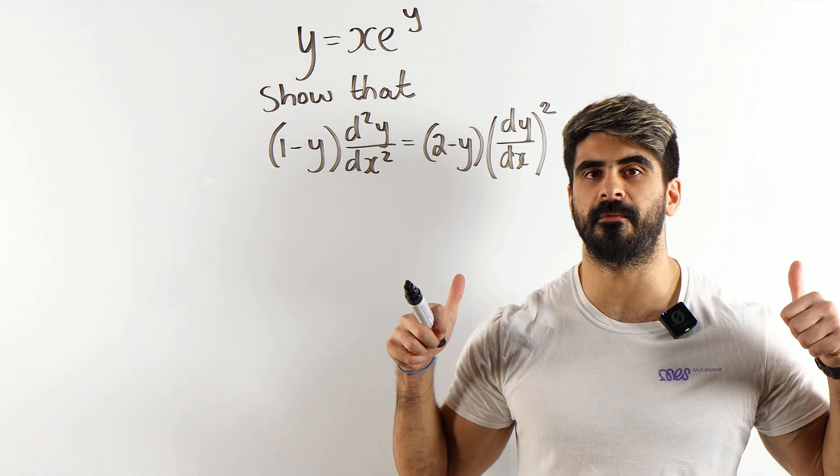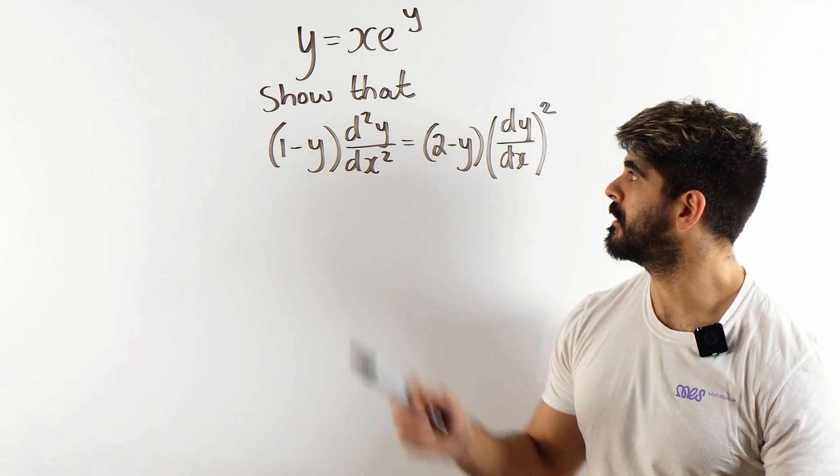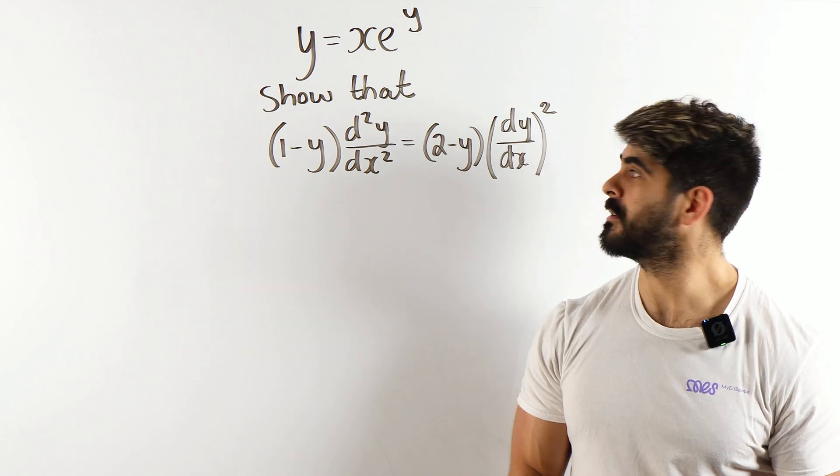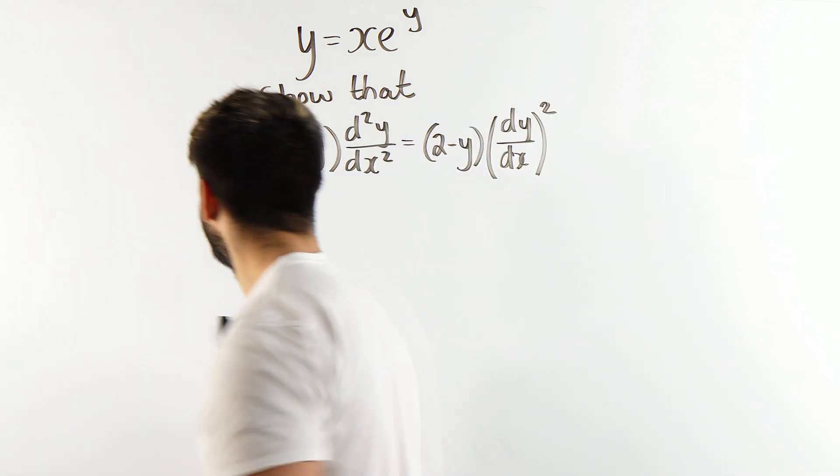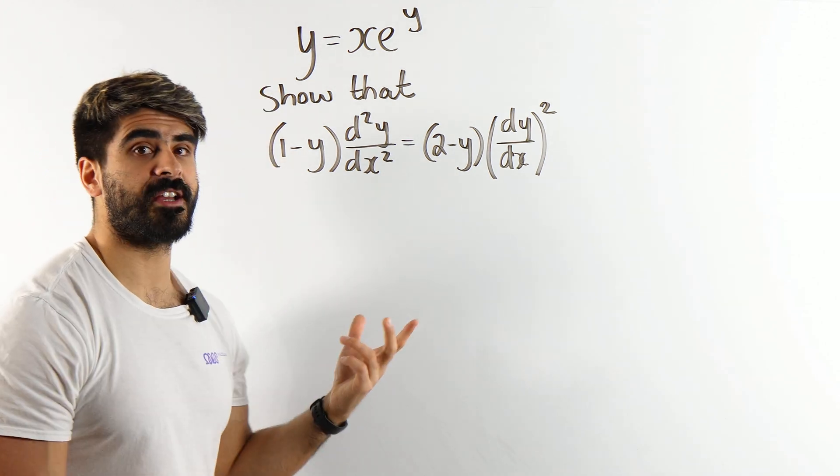Many students cheer with absolute joy when they see implicit differentiation, but what about this one? y equals xe to the y, show that this differential equation is true. So we're going to do that by obviously differentiating this, and there's different ways you can do it.